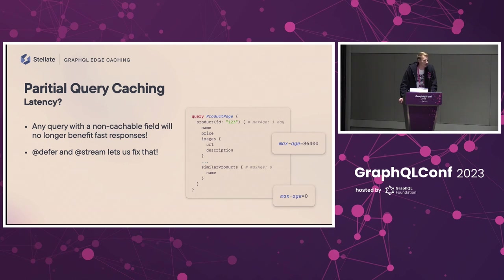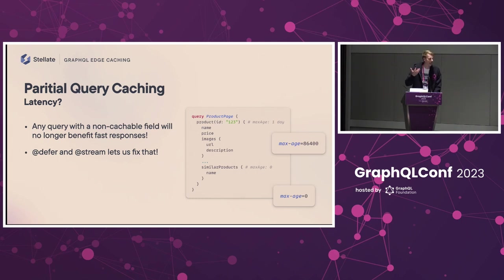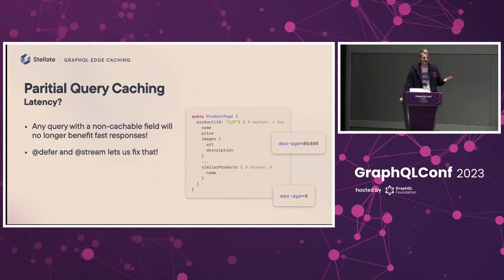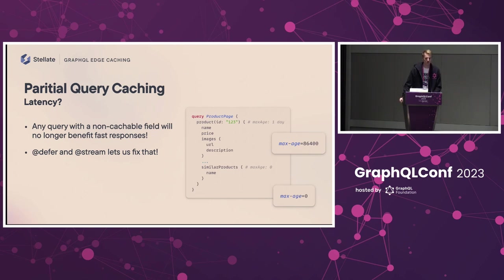But this solution is not complete. We can definitely lower infrastructure costs, but we cannot give fast response times. The query comes in, we get all the product information from our cache immediately, but we can't return the response yet because the similar products in that query — the cache doesn't have that because we were explicitly told not to cache it. So we need to go to the origin and get the similar products. That might take a long time — it's definitely not going to take 50 milliseconds. So we wait for the origin, and only then can we return it to the client. This is fairly slow and inefficient.